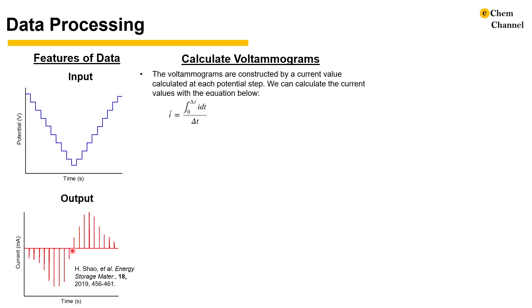Because voltammograms are constructed by current values, we need to calculate the current at each potential step using the equation here. It represents an average current calculated from the total charge measured over a timed interval on each potential step delta t. This delta t is calculated based on the sweep rates we would like to simulate as sweep rate is defined as the ratio of potential step to time.